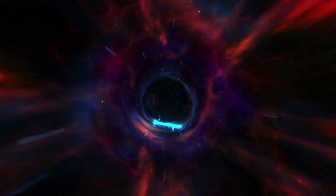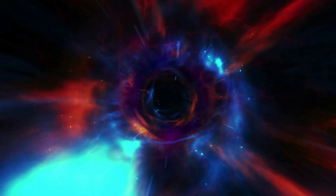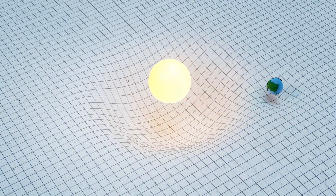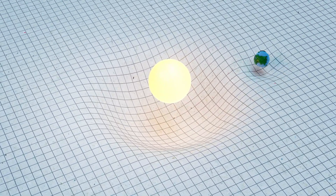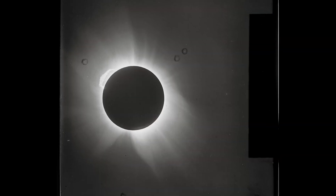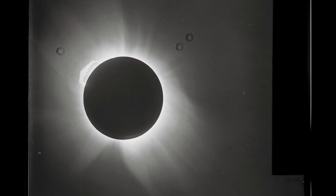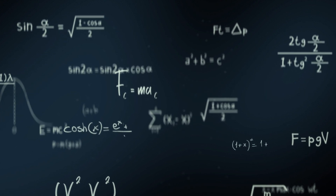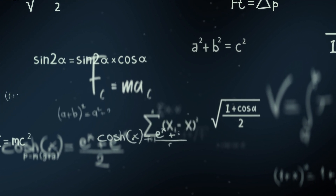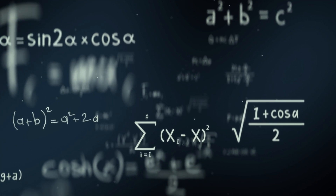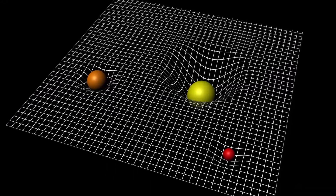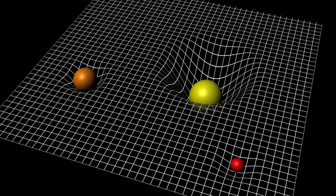It basically says that space and time can be bent by large gravitational fields. And the more mass of the object, the more that space-time will be warped. If an object is big enough, it should be able to bend light and time. Einstein did the math and his theory checked out, but of course, this was all just a theory.